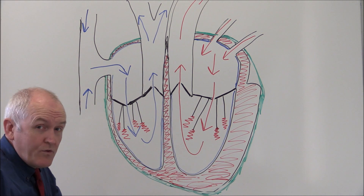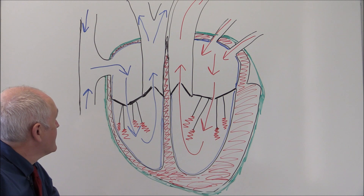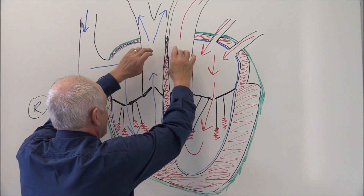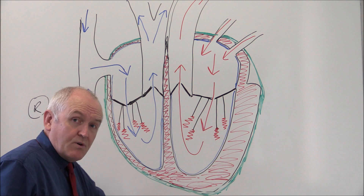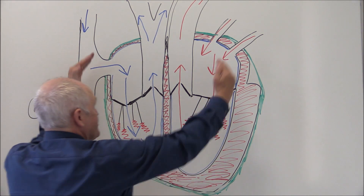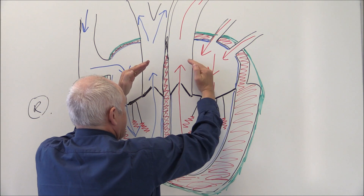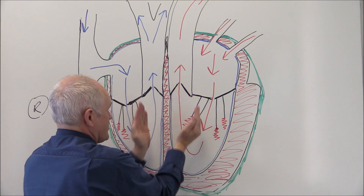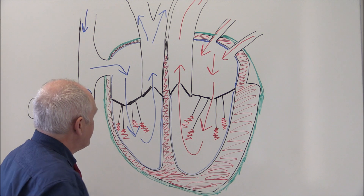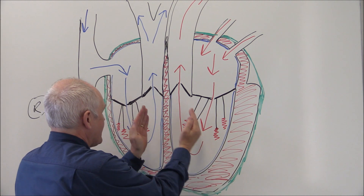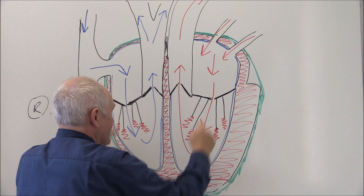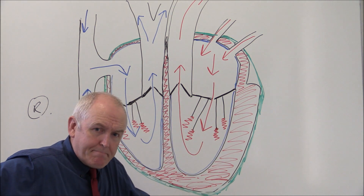So we have a one-way flow of blood: from the veins to the atria, to the ventricles, out into the arteries. That's what valves are - they ensure one-way flow. Both atria contract at the same time and both ventricles contract at the same time, so when the ventricles contract, that shuts the mitral valve and the tricuspid valve essentially simultaneously.